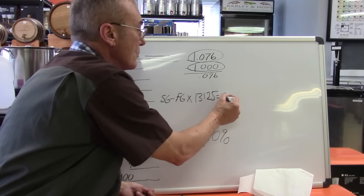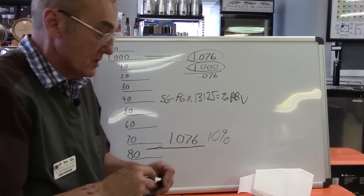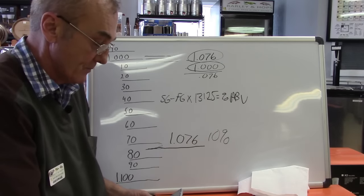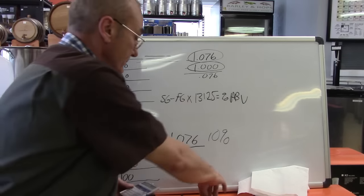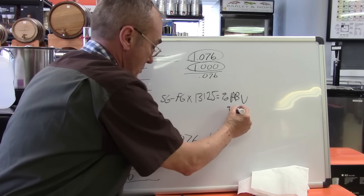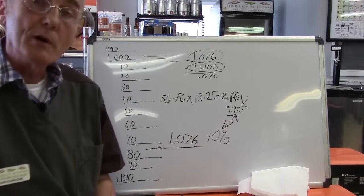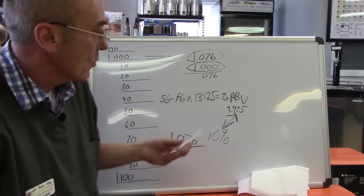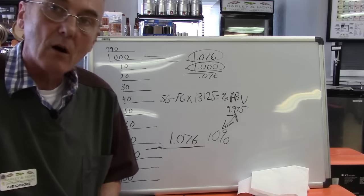This will give you your percent alcohol by volume. So now we could do that longhand, or I just use a calculator: 0.076 times 131.25 equals, this would equal 9.975. That's pretty close. So that's why that scale is there. The scales just kind of give you an idea, but you can work out the longhand, and we are just shy of 10% of alcohol by volume.